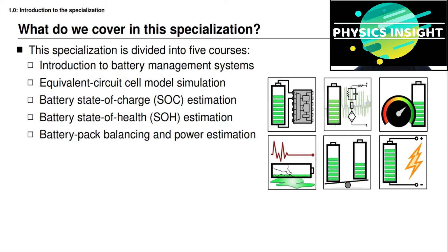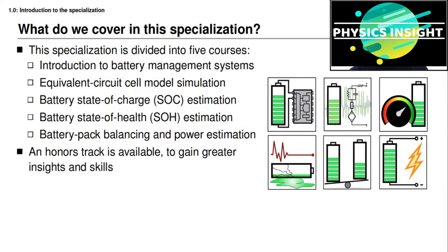In the fifth specialization course, you will learn about two main topics: balancing or equalization, and estimating power limits. Balancing has to do with keeping all of the battery cells in the battery pack at a uniform operational state, even though the characteristics of each individual cell may be slightly different. Power limits estimates tell you how much power you can safely get out of the battery pack at a particular point in time without causing life hazards or safety hazards. Additionally, there's an honors track available in the specialization, so if you have a really keen interest, you can gain greater insight and skills by watching the video lessons and taking all of the assignments in the honors track.